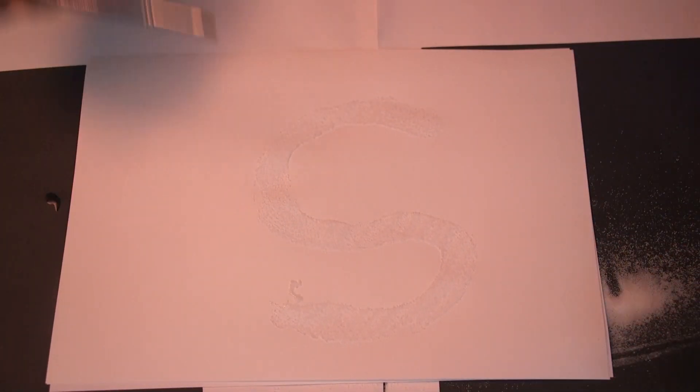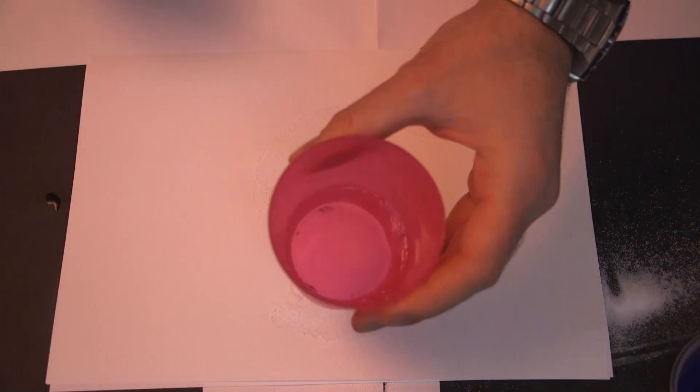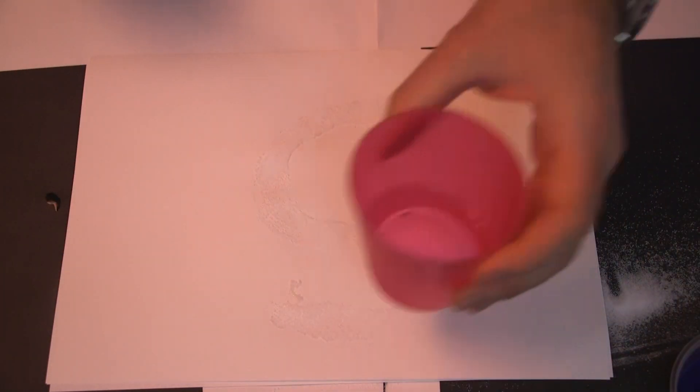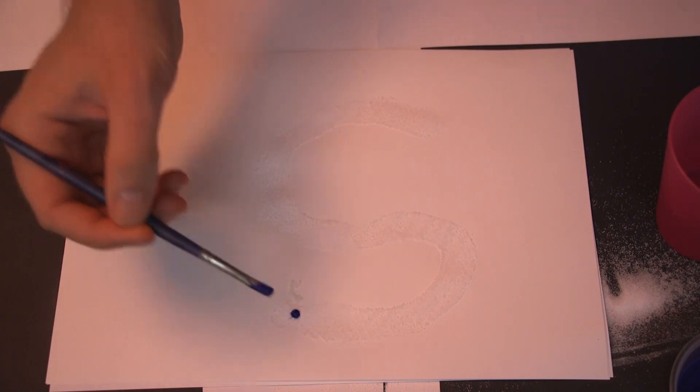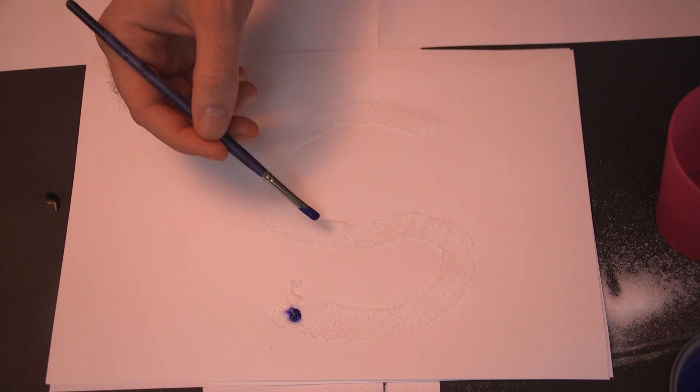Then move on to your colours. Now what you want to do with your paint is add a bit of water to each one, just so it's a little bit thinner. Then just start dabbing it onto the salt. See the way it starts to seep out through the salt? That's the effect that you want to get.